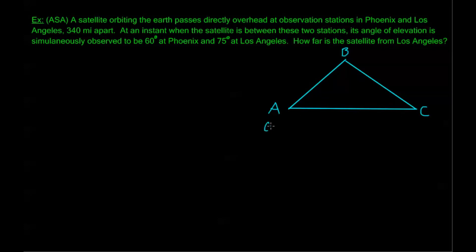Now let's let angle A be Los Angeles and angle C be coming from Phoenix. Now at this instant, we observe that the satellite has an angle of elevation of 75 degrees from Los Angeles. At that same instant, the angle of elevation from Phoenix is 60 degrees. And we know that these two observation stations are 340 miles apart. Now if I want to label the rest of my triangle, this would be side little a, and this would be side little c. Now we want to keep our goal in mind here. My goal is to find the side little c. This is going to be the distance between Los Angeles and my satellite, which is up here at point B.